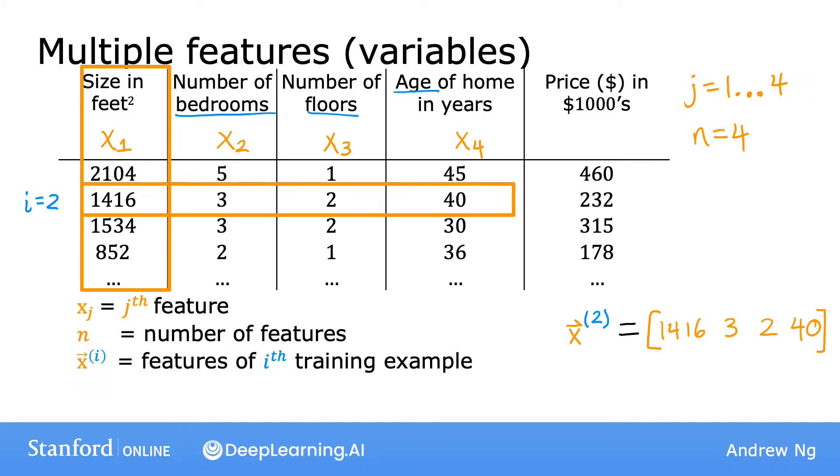And to refer to a specific feature in the i'th training example, I will write x superscript i subscript j. So for example, x superscript 2 subscript 3 will be the value of the third feature, that is the number of floors in the second training example. And so that's going to be equal to 2. Sometimes in order to emphasize that this x2 is not a number, but it's actually a list of numbers that is a vector, we'll draw an arrow on top of that. Just to visually show that is a vector. But you don't have to draw this arrow in your notation. You can think of the arrow as an optional signifier that's sometimes used just to emphasize that this is a vector and not a number.